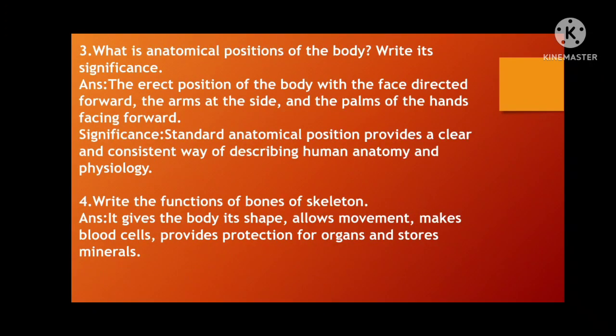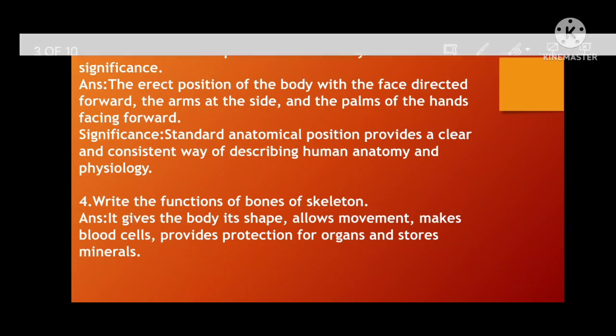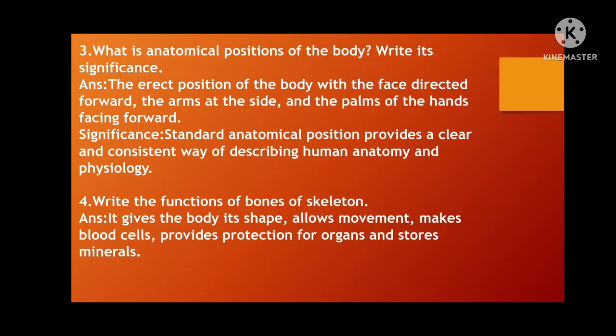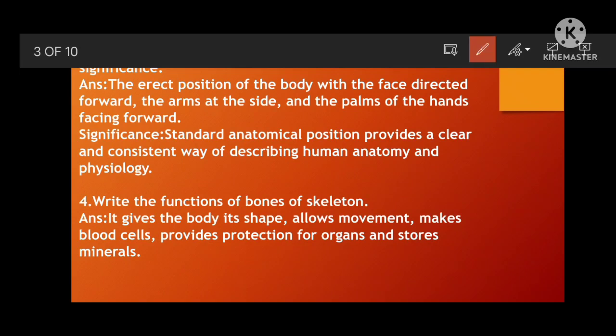Next: What is the anatomical position of the body? Write its significance. The erect position of the body with the face directed forward, the arms at the side, and the palms of the hands facing forward — these are the positions of human body anatomy. The significance is that the standard anatomical position provides a clear, consistent way of describing human anatomy and physiology.